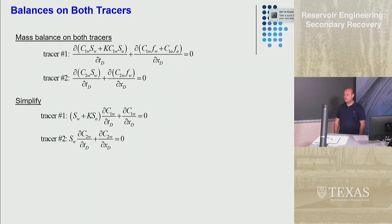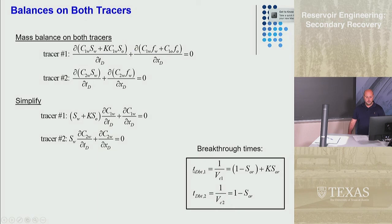We know by now that these equations tell us about the breakthrough time and the velocity of the concentration fronts. Essentially the breakthrough time is equal to this coefficient. The breakthrough time of tracer number one is one over the velocity which is equal to SW which is one minus SOR plus K times SOR. The breakthrough time of the second tracer is one over the velocity which is SW or one minus SOR.